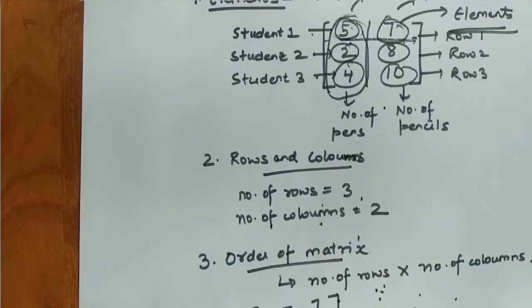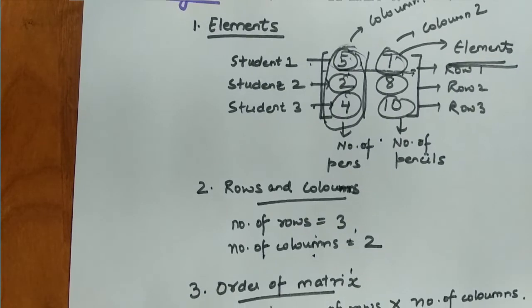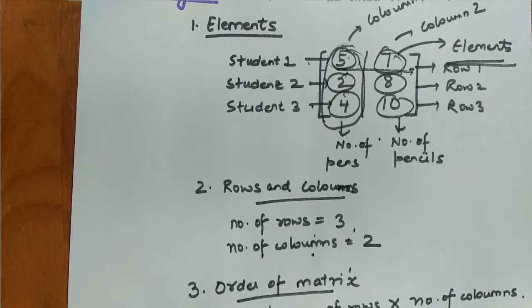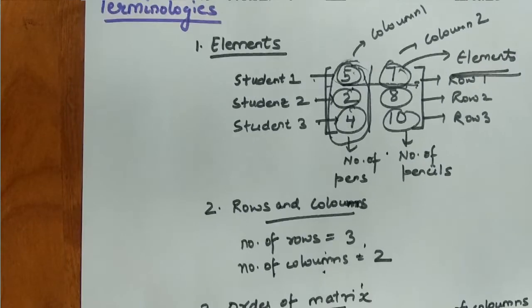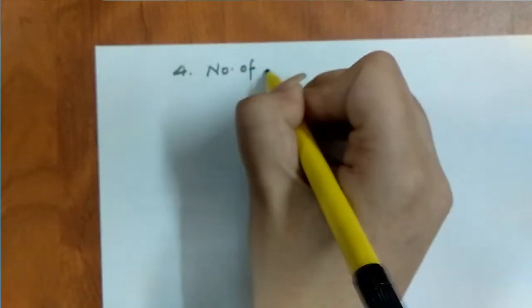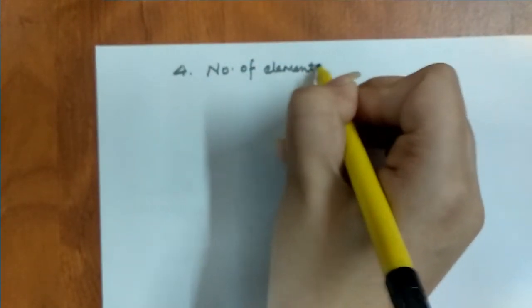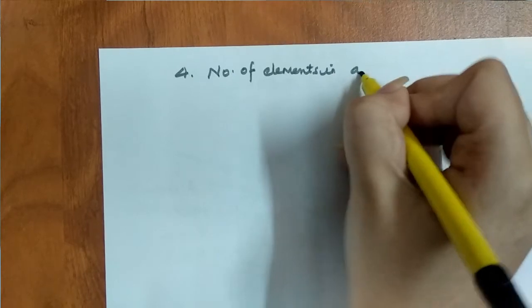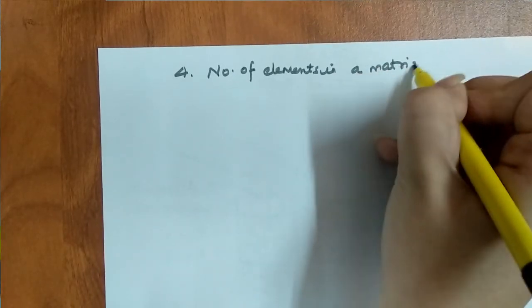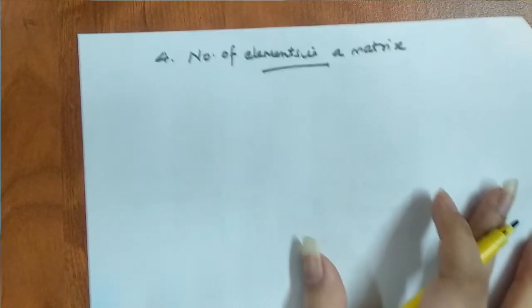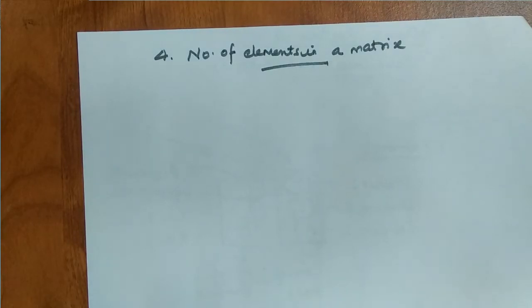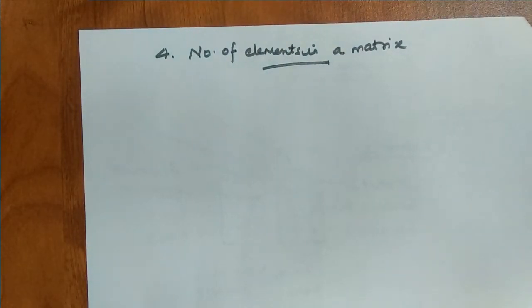So we have covered three terminologies: first is elements, second is rows and columns, and the third is the order of matrix. Now we will start with the fourth terminology, which is the number of elements in a matrix — that is, how many elements are present in a matrix.